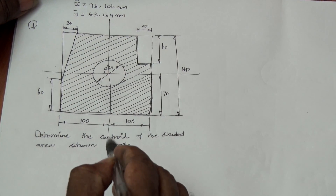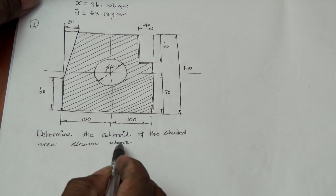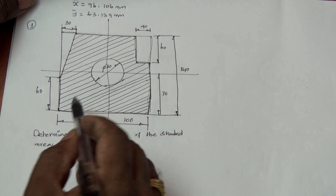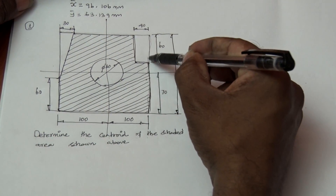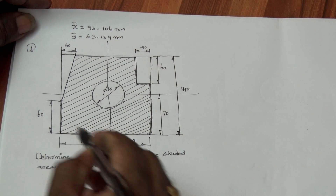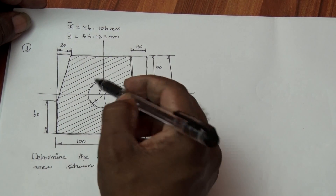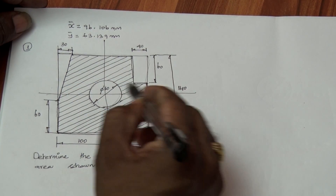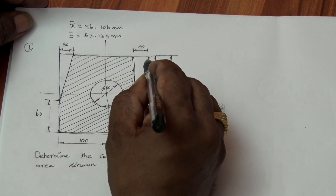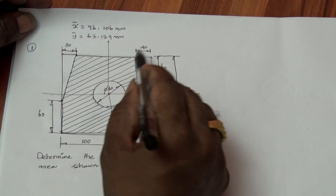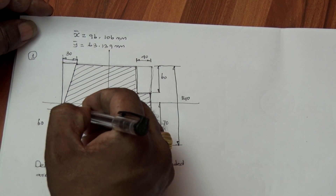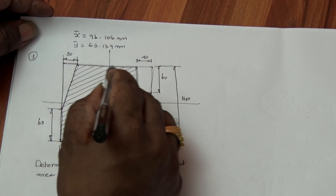Determine the centroid of the shaded area shown above. The shape consists of a complete rectangle with length 200 mm and breadth 140 mm. From this, a circle of diameter 60 placed centrally, a rectangle of length 40 and height 60 at the extreme right top corner, and a triangle with base 30 and height 80 need to be subtracted.